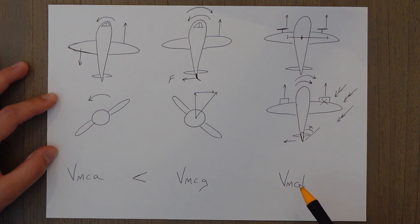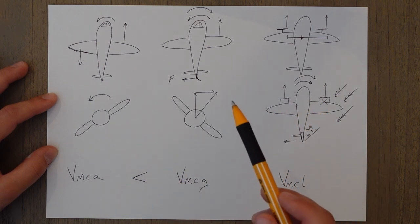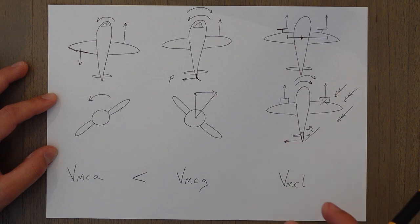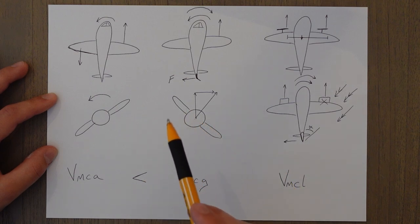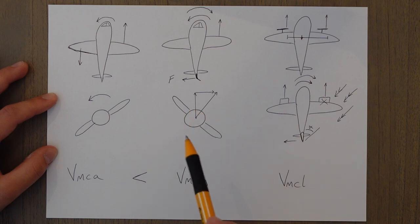The last one is VMCL, speed for minimum control and landing. It's actually to do with the go around because we need to be able to control our direction when applying maximum thrust when already flying at slow speeds. All these speeds are done for the worst possible conditions. Critical engines failing, aft center of gravity, so our balance arms are shorter. And the ones while we're in the air, the VMCA and the VMCL, also allow for this bank ankle method to be used only up to the five degree limit though.